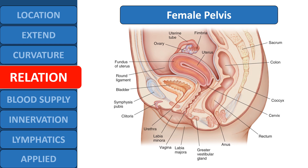The anterior relation of the rectum varies between male and female. In the female pelvis, in the upper half of the rectum, it is related anteriorly to the rectouterine pouch, also known as the pouch of Douglas, which lies between the uterus and the rectum. In the lower half, it is related to the posterior fornix and posterior vaginal wall. Between the rectum and the vaginal wall lies the fascia of Denonvilliers, with the perineal body located at the lower end. The Denonvilliers fascia extends up to the pouch of Douglas.